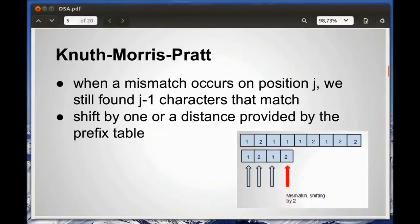In the Knuth-Morris-Pratt algorithm, we use an observation. When a mismatch occurs in the Naive method, say at position j in the pattern, we have still found characters that do match. Starting with this observation, we shift the pattern either by one or by a distance provided by a pre-computed prefix table.